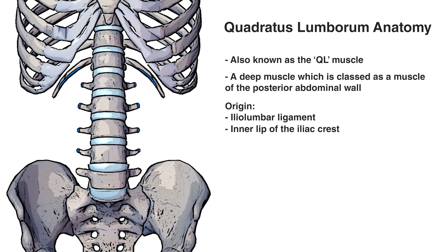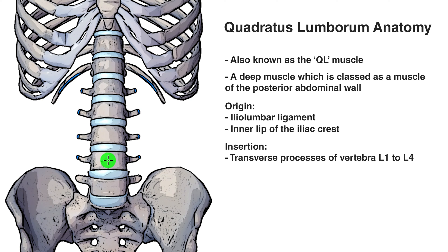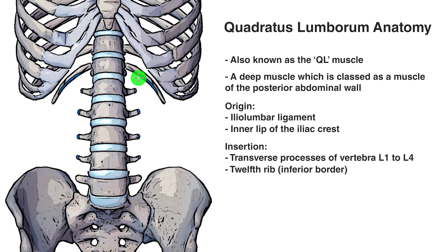Moving on to the insertion points, marked out here in blue. We'll start with these bony projections coming off the right and left side of each vertebrae — these are called the transverse processes. The quadratus lumborum is inserting onto the transverse processes of L4, L3, L2, and L1. In addition, it's also inserting onto the 12th rib — specifically the inferior border, which is the bottom part of that rib.